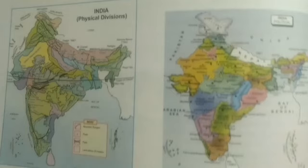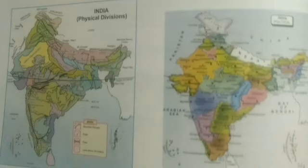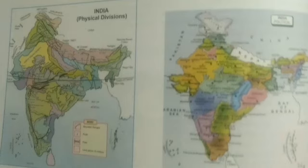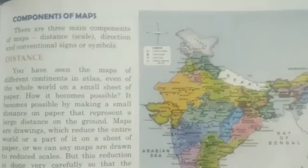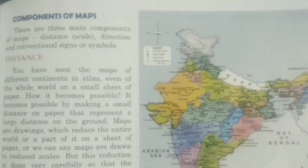Component number one: distance. You have seen maps of different continents, the atlas, and even the whole world on a small sheet of paper. Maps are drawn to reduce scale — the entire world or a part of it is represented on a sheet of paper. This reduction is done very carefully so that the distance between different places remains accurate. Therefore, a scale is chosen for this purpose. Scale is the ratio between the actual distance on the ground and the distance shown on the map.